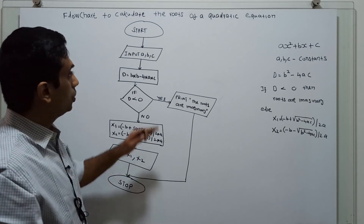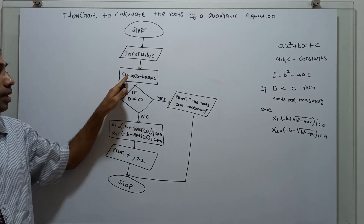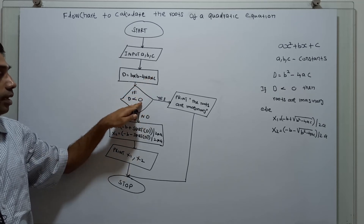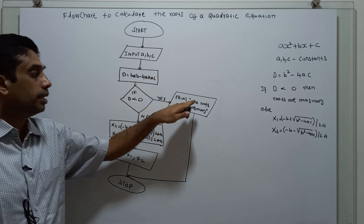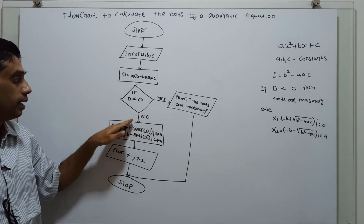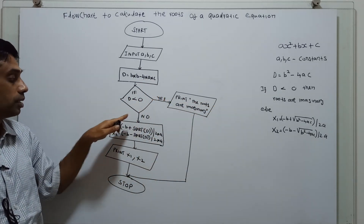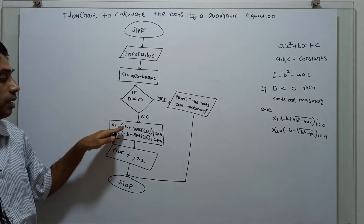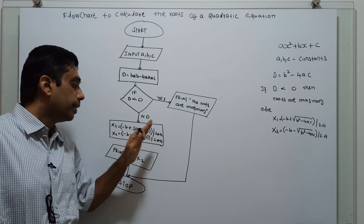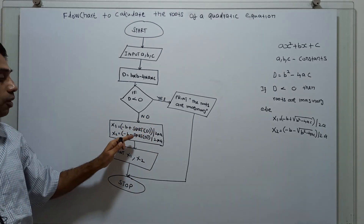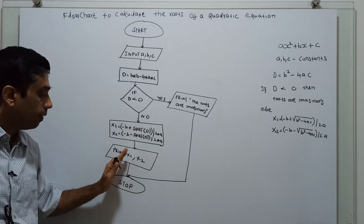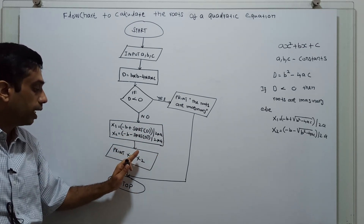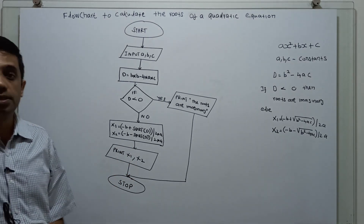To recap: I am obtaining the input a, b, c; calculating the discriminant which is b squared minus 4ac; and checking if the discriminant is less than 0 — if so, printing that the roots are imaginary. Otherwise, since it is greater than or equal to 0, I am calculating the roots using the formula: minus b plus square root of d over 2a for x1, and minus b minus square root of d over 2a for x2. Then I am printing the values of x1 and x2, the roots of the quadratic equation. This is the logical end of the flowchart.